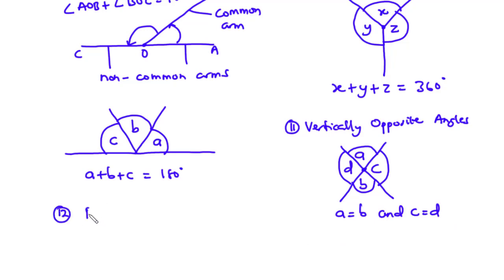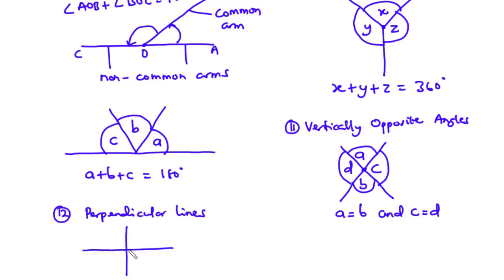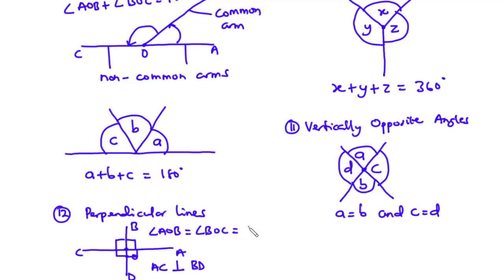Two lines are said to be perpendicular if they meet or intersect at right angles. When two perpendicular lines meet, four right angles are formed. Assuming lines OA, OB, OC, and OD meet at a point, the line AC is perpendicular to line BD, and the angles AOB, BOC, COD, and AOD are all equal to 90 degrees.